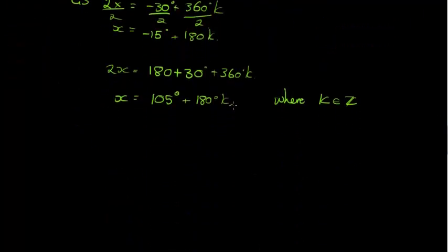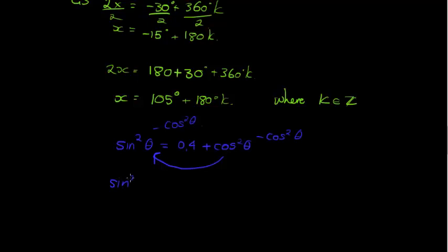I can maybe just briefly show you what the other one might look like. So, I might have something like this. Sine squared θ is equal to, let's say, 0.4 plus cos squared θ. And, here we see, okay. If I take this to the other side, in other words, I subtract cos squared on both sides. Then, I find sine squared θ minus cos squared θ is equal to 0.4.